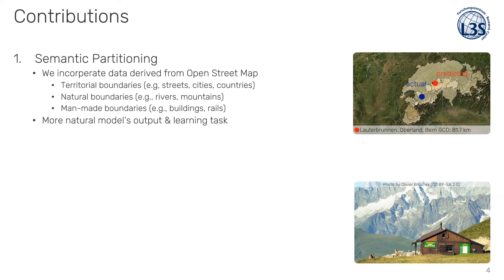As the aforementioned partitionings rely on arbitrary or rectangular shaped cells, we propose a semantic partitioning that incorporates data derived from OpenStreetMap. We discover territorial, natural and as well man-made boundaries and makes the model's output and learning process more natural or explainable by default.